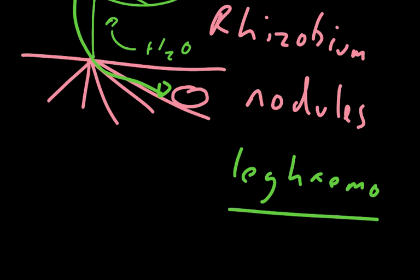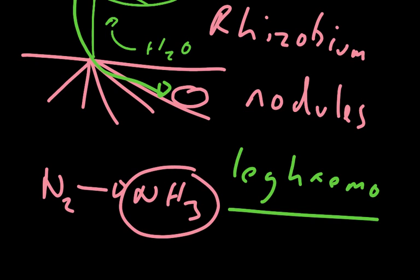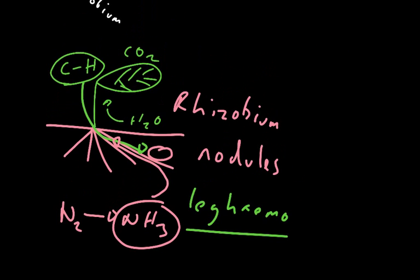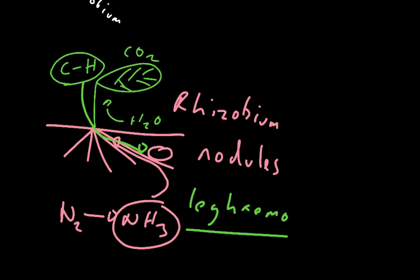The rhizobium, which exists in these nodules, is taking nitrogen gas and turning it into ammonia. The ammonia can then go up the plant and into the leaf where it's turned into amino acids and nucleic acids and leads to the growth of our plant.